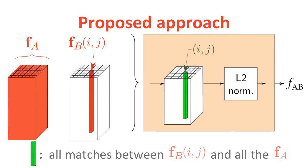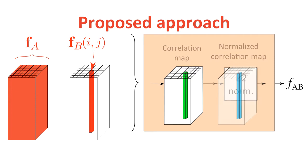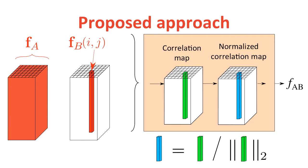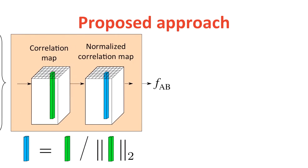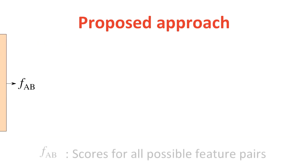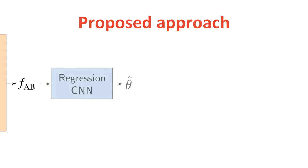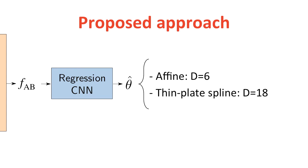Motivated by David Lowe's second nearest neighbor test, we perform a per-column L2 normalization to down-weight ambiguous matches in a differentiable way. Now we have a tensor FAB which contains scores for all possible feature pairs. We input it into the third stage implemented using a regression CNN, which estimates the parameters of a geometric transformation, such as 2D affine or thin-plate spline.